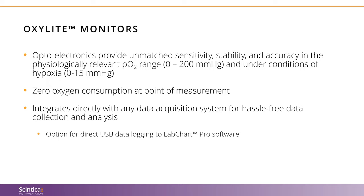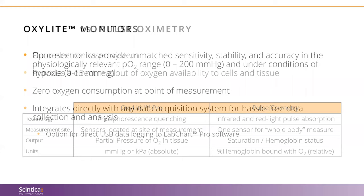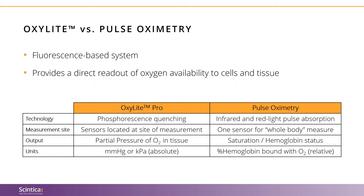We can quickly compare the OxyLite oxygen monitor with pulse oximetry. Pulse oximetry provides blood oxygen saturation — the percentage of hemoglobin saturated by oxygen — of the whole body, showing only hemoglobin status of the whole animal. In contrast, the OxyLite, which utilizes phosphorescence quenching technology, provides a direct readout of oxygen availability to cells and tissues. The OxyLite takes measurements from sensors located at the site of measurement recorded as absolute units of millimeters of mercury or kilopascals, while pulse oximetry uses one sensor for a whole-body measure with relative units measured as percent hemoglobin bound with oxygen.